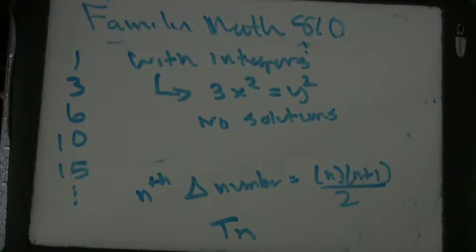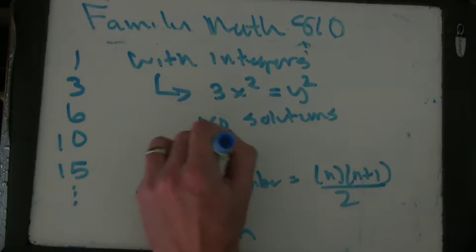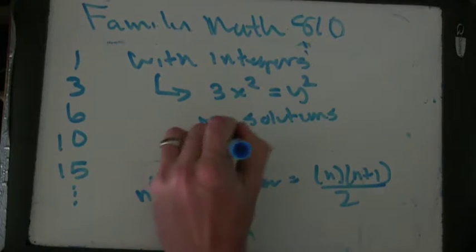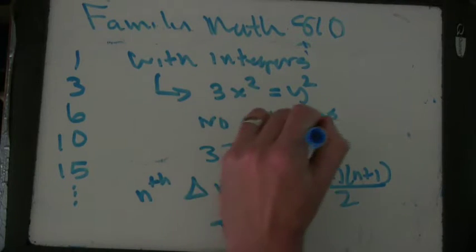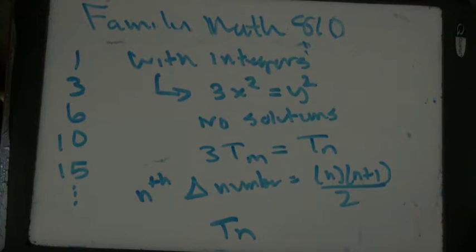Okay, and what he was trying to show here is that it can work. So with the triangle numbers you can do three times x times x plus one over two equals y times y plus one over two. So it was three t_m equals t_n did seem to have solutions. Yep, okay.